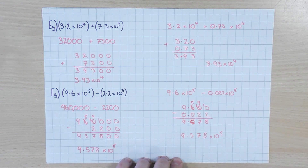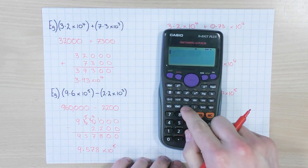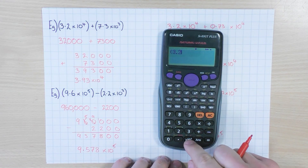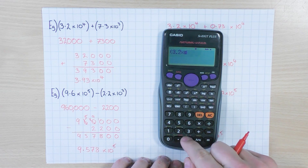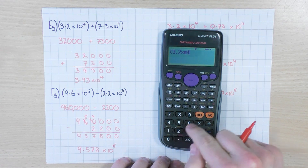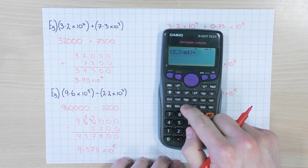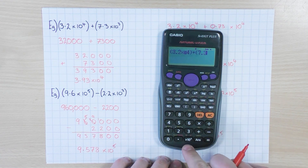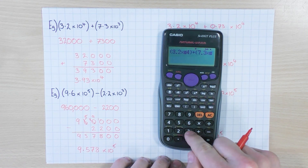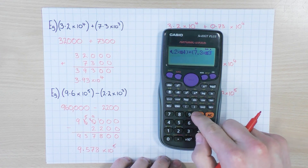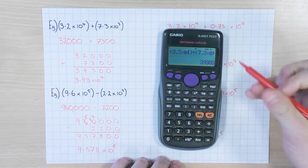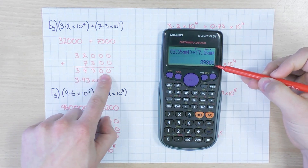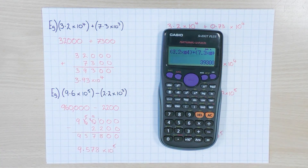For the calculator, there's no difference for addition: bracket 3.2, ×10ˣ button to the power of 4, close bracket, plus 7.3, ×10ˣ button to the power of 3, close bracket, press equals. You get the answer and then just convert to standard form. Hopefully that helps explain how to do calculations with numbers in standard form — thanks for watching!